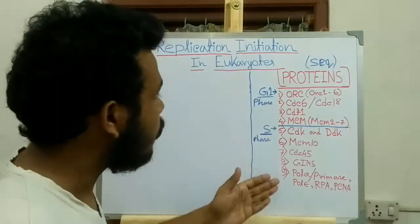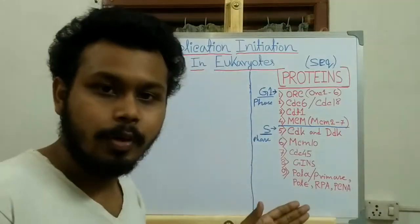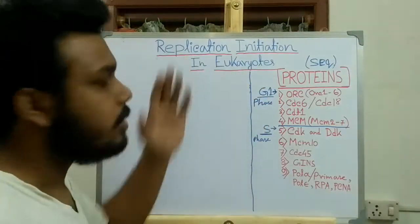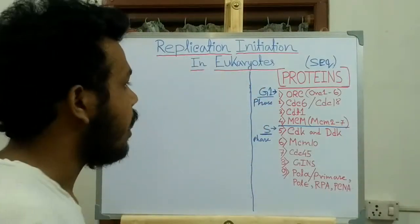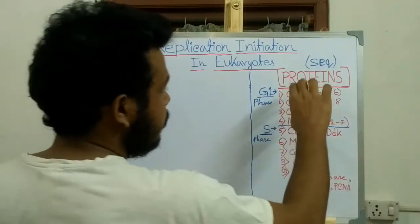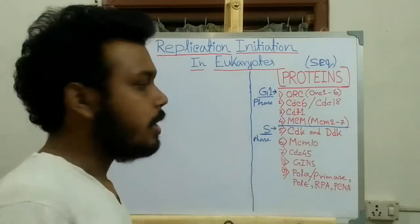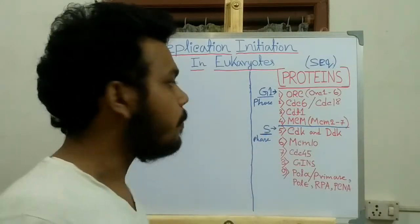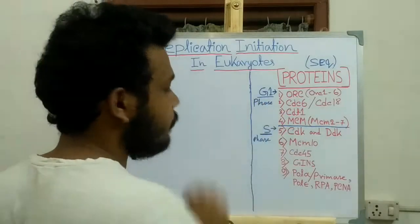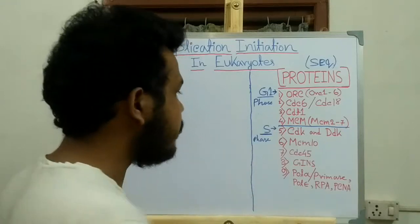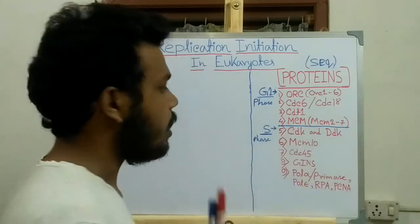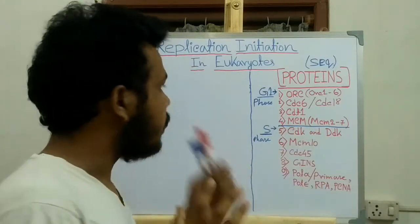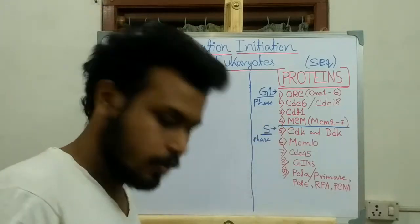Now this is the whole sequence of proteins which are required to initiate the replication. The first four proteins are required to form the pre-replication complex in the G1 phase, and the latter proteins are required to initiate replication in the S phase.